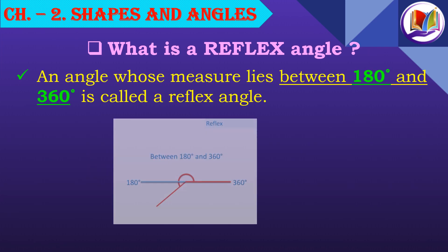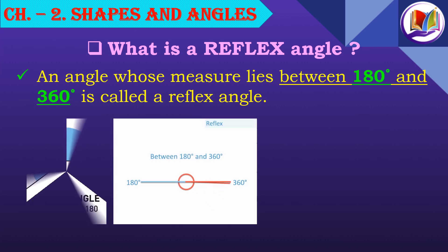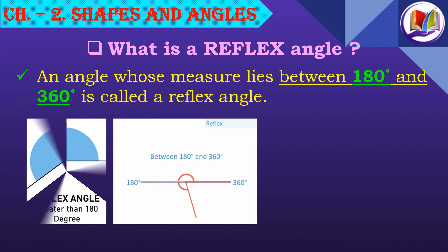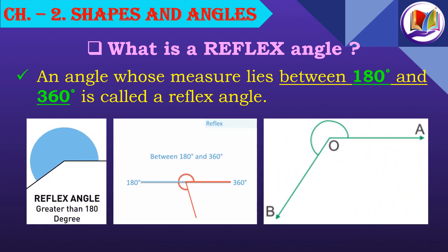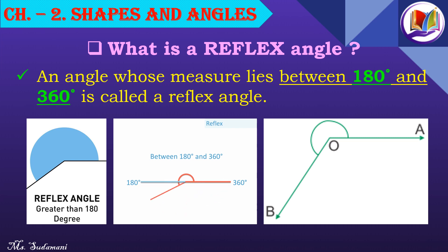What is a reflex angle? An angle whose measure lies between 180 degrees and 360 degrees is called a reflex angle. That is, it is more than 180 degrees and less than a complete angle of 360 degrees.